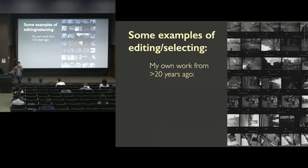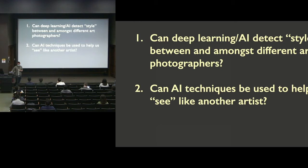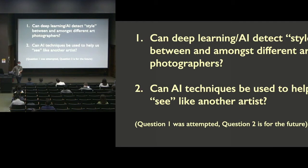This is a contact sheet from my own work from my first photography class — you would go through dozens of rolls of pictures and select maybe ten from like a thousand photographs that you would say are your best ones. So the real question is: which are those best photographs? I have two questions when approaching this: Can deep learning and AI detect style between and amongst different art photographers? And can AI techniques be used to help us see like another artist? Spoiler alert: question one was attempted and will be the focus of the results. Question two is for the future, but I'll end with some thoughts on it today.